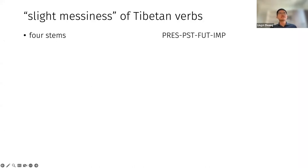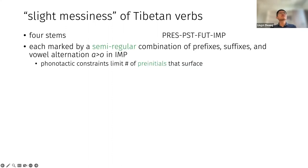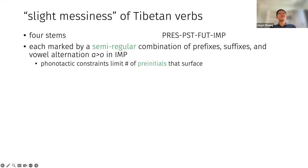The verbs in Tibetan have four stems, traditionally called present, past, future, and imperative. Each of these stems is marked by a semi-regular combination of prefixes, suffixes, and in the case of the imperative, a vowel alternation — a vowel change from A to O — if applicable. It happens, but it doesn't always happen.